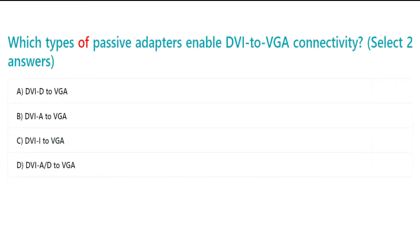Which types of passive adapters enable DVI-to-VGA connectivity? Select two answers. A. DVI-D-to-VGA. B. DVI-A-to-VGA. C. DVI-I-to-VGA. D. DVI-A/D-to-VGA.